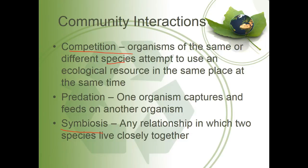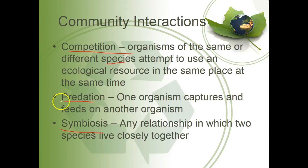Predation is when one organism captures and feeds on another organism — a cat and a mouse, a lion and a gazelle, or even a bird and a seed. A prey item is anything preyed upon by a predator. Symbiosis is any relationship in which two species live closely together. Symbiotic relationships include predation, competition, mutualism, commensalism, and parasitism.